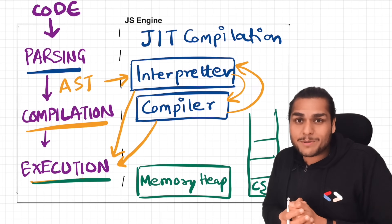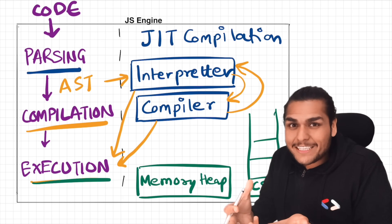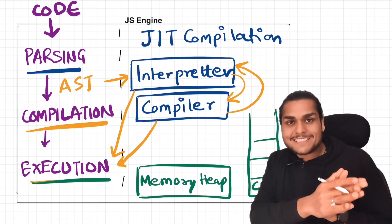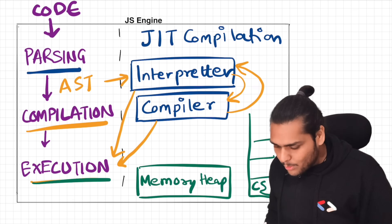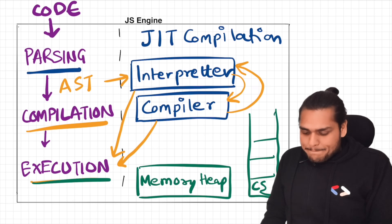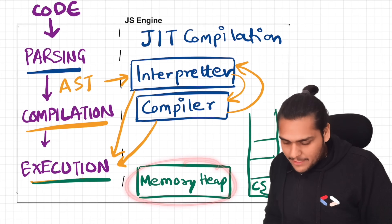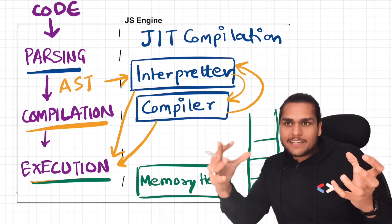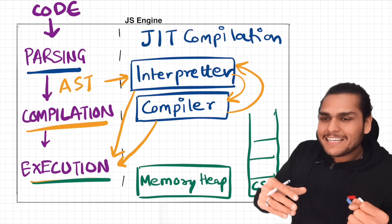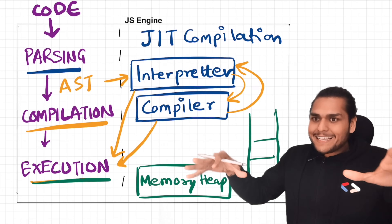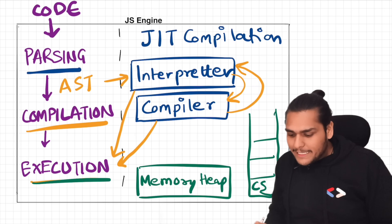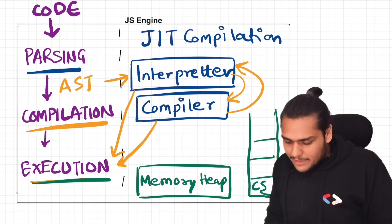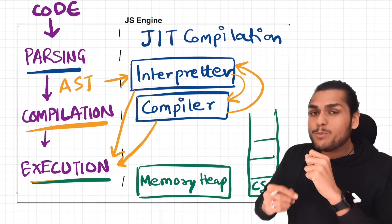The JavaScript runtime has a JavaScript engine, and inside the JavaScript engine we have a call stack where all these execution contexts come in and pop out. The memory heap is the space where all the variables and functions are assigned memory — it is constantly in sync with the call stack, the garbage collector, and a lot of other things that all work together.